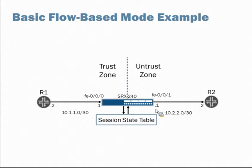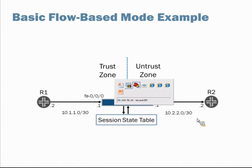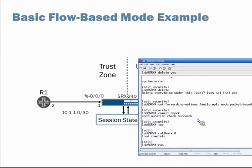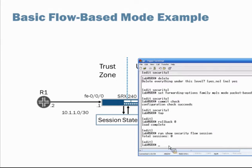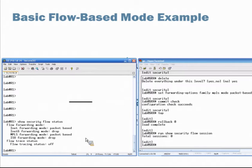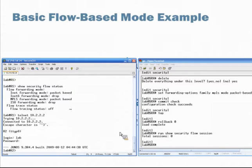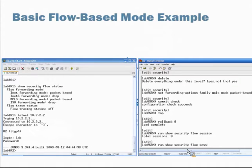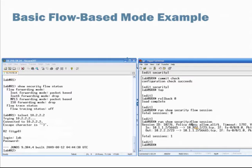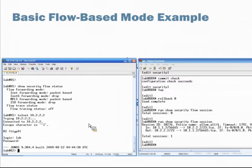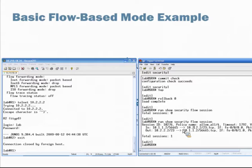There's an operational mode command you can run on the SRX to see current security flow sessions: show security flow session. Currently there are zero sessions going through the SRX device. Let's create a session from R1 to R2 — we'll run a telnet command to the IP address of Router 2, log in, and establish the connection. Back on the SRX, running the same command, we see a session has been created from 10.1.1.2 to 10.2.2.2. When we end the session on Router 1, the session count goes back to zero.